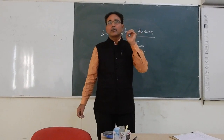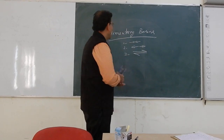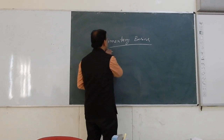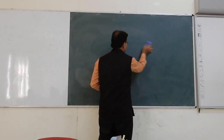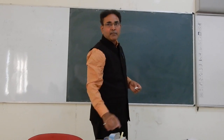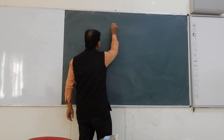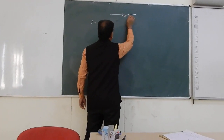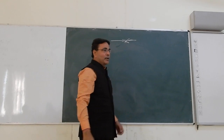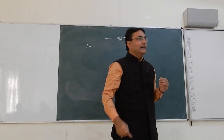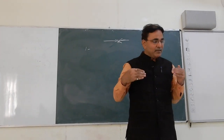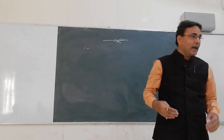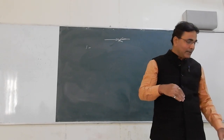Today we will discuss sedimentary basins formed when the plates are collided, and sedimentary basins formed by transform movement. When two plates are moving towards each other and under collision, their density is roughly equal, and that is why one plate is not subducting.